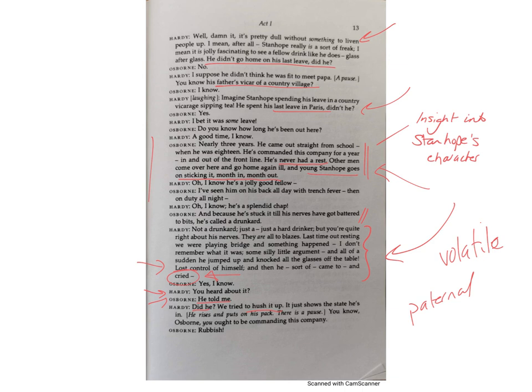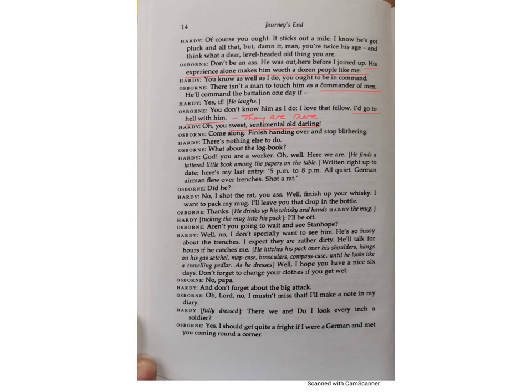Hardy's view that 'we tried to hush it up' shows something humiliating or embarrassing about the fact Stanhope cried and lost control — that repression and shying away from emotion feeds into the theme of what it means to be a man in this environment. Osborne is quick to defend Stanhope — saying how good, reliable, and strong he is — showing his loyalty. And Hardy, as so often when there's strong emotion, uses humour to deflect it: 'You sweet, sentimental old darling.'